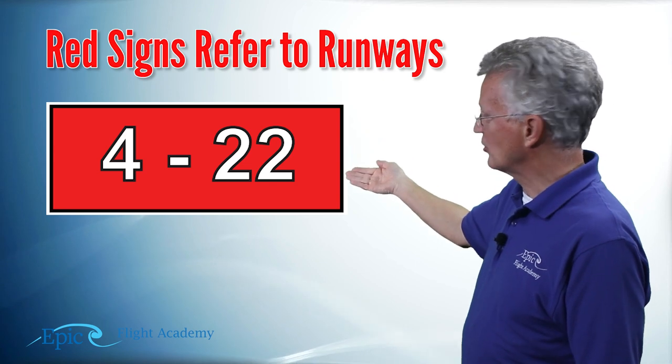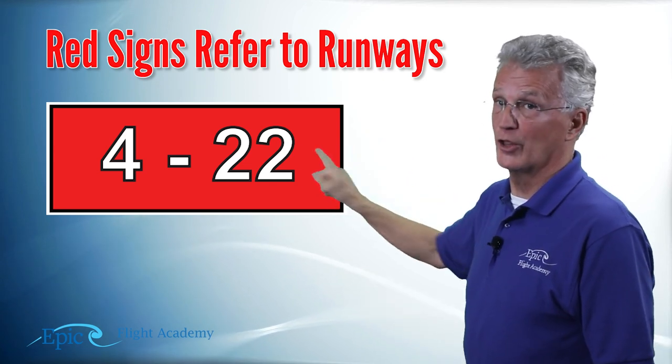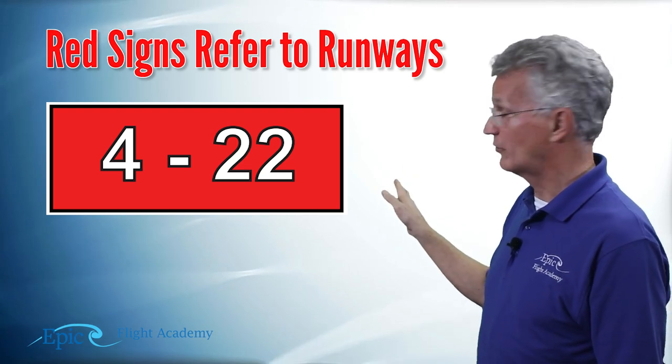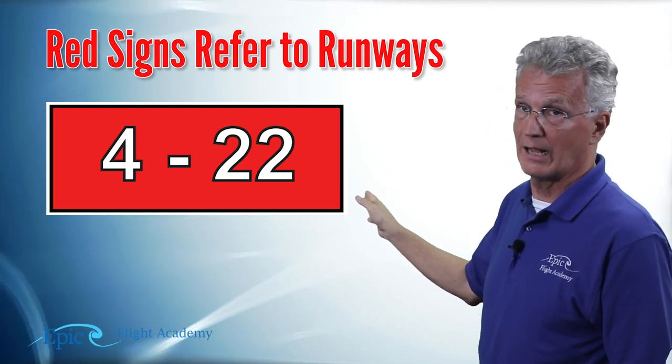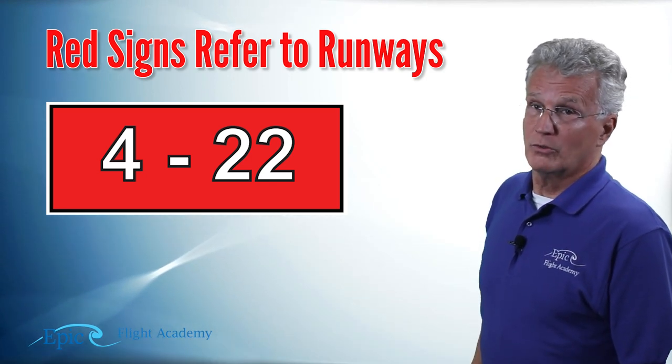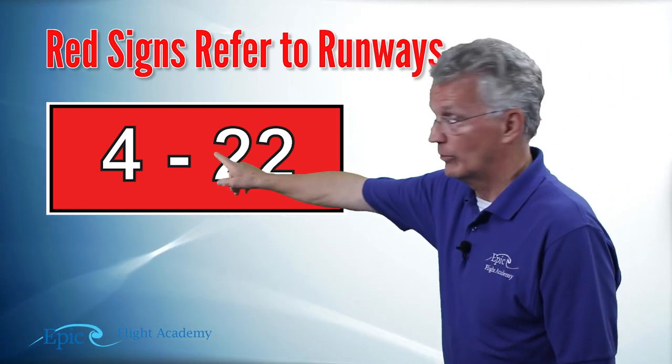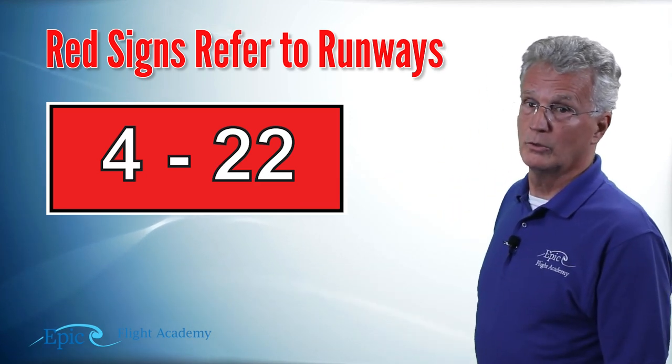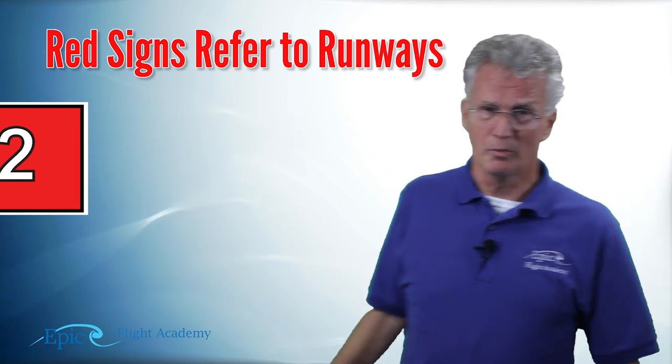Notice, as you're looking at this sign, the number 4 is on your left, the number 22 is on your right. If you were to proceed out to that runway, the 040 approach end would be to your left, the 22 approach end would be to your right. So, signs that are red have to do with runways.